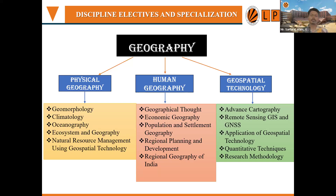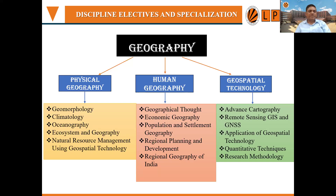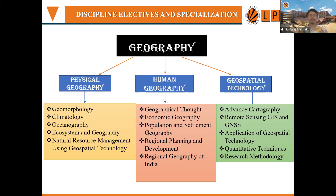The second branch is human geography, which covers conceptual and philosophical ideas like geographical thought, how scholars discover different ideas, economic geography, primary and tertiary economic activities, population and settlement geography. These core courses benefit students in choosing careers. For instance, in regional planning, a town planner can pursue courses in regional planning and development, regional geography of India. Students wanting to crack the civil services exam will find geography of India as a main paper.